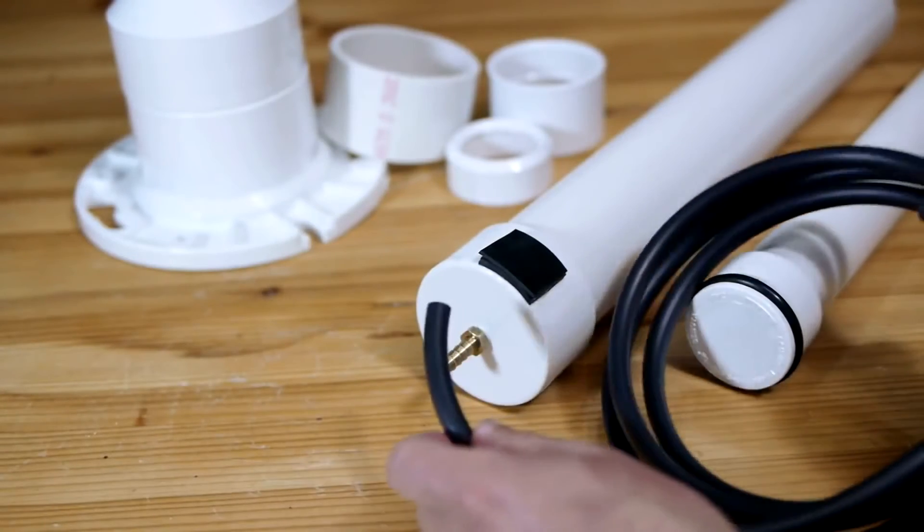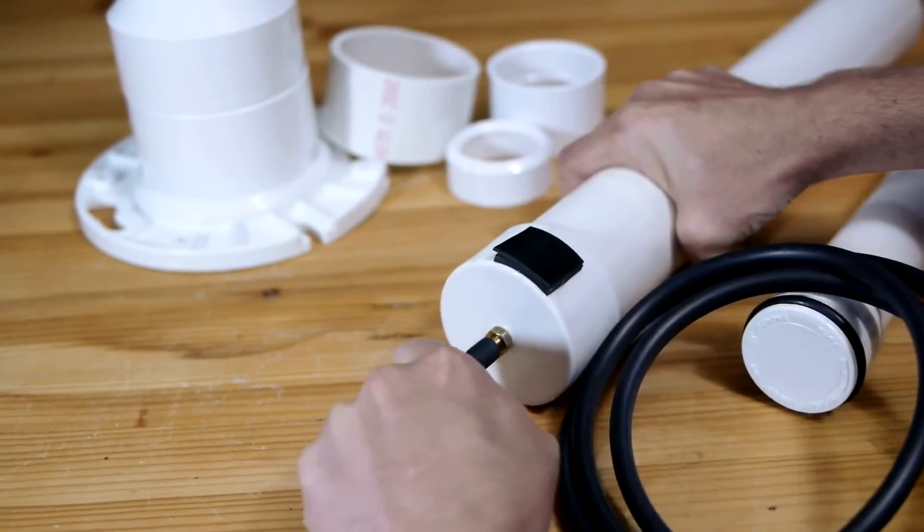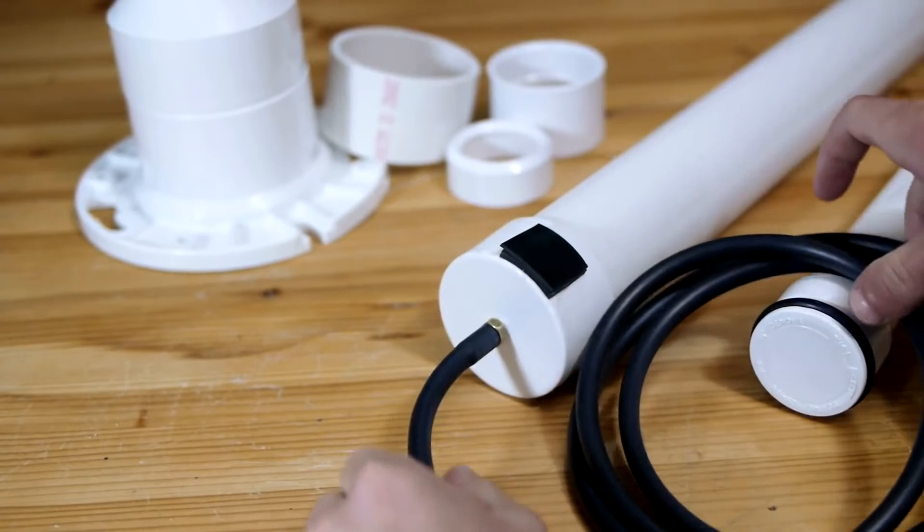Before moving on to the next step, a length of quarter inch vacuum hose should be pressed onto the brass fitting at the base of the pump.